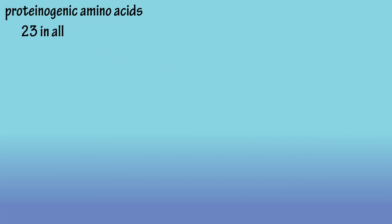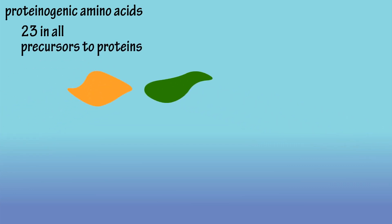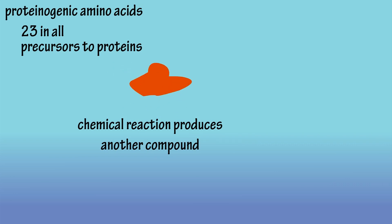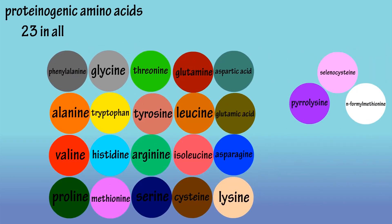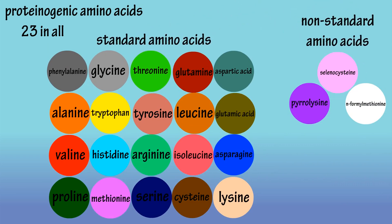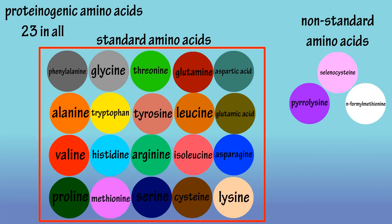There are a total of 23 amino acids that are proteinogenic. Proteinogenic amino acids are precursors to proteins, which means they are compounds that participate in a chemical reaction to produce another compound. Of these 23 amino acids, 20 are called standard amino acids and the other three are non-standard amino acids, listed on the screen.